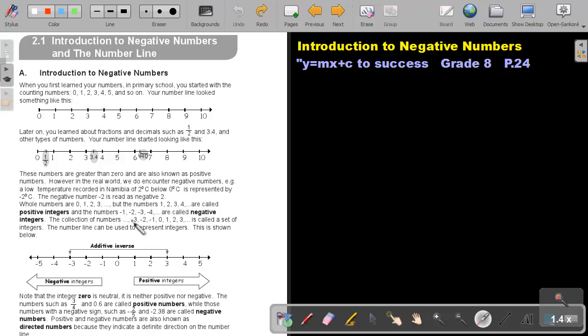The collection of numbers negative 3, negative 2, negative 1, 0, 1, 2, 3, is called a set of integers.